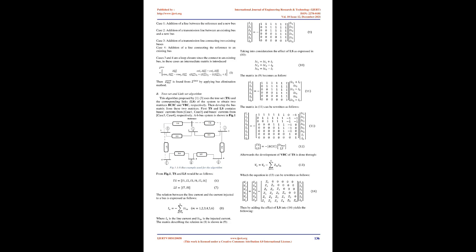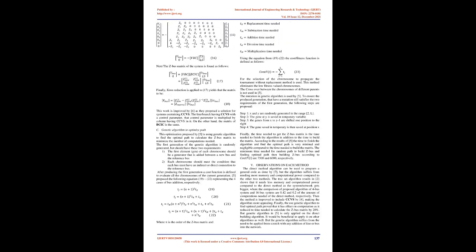Section 4 presents the Z-bus building algorithms and optimizations, showing different algorithms and methods to obtain or reduce computation of Z-bus. The direct building algorithm is a sequential and recursive process where the Z-bus matrix building follows four cases: Case 2 is addition of a transmission line between an existing bus and a new bus; Case 3 is addition of a transmission line connecting two existing buses; Case 4 is addition of a line connecting the reference to an existing bus. Cases 3 and 4 are loop closures, where an intermediate matrix is introduced and reduced by applying the bus elimination method.